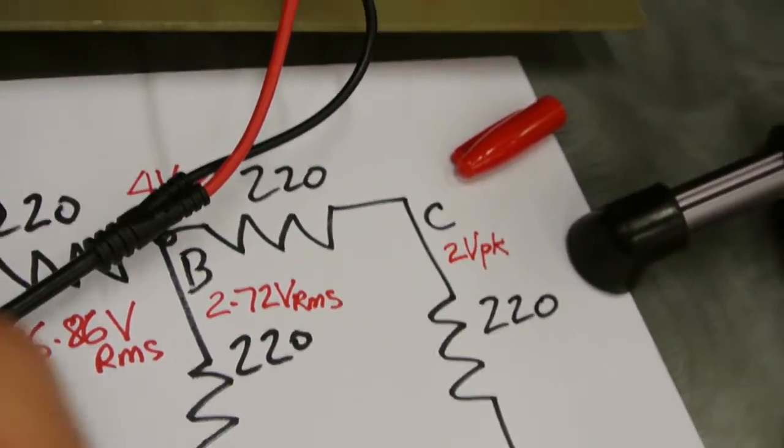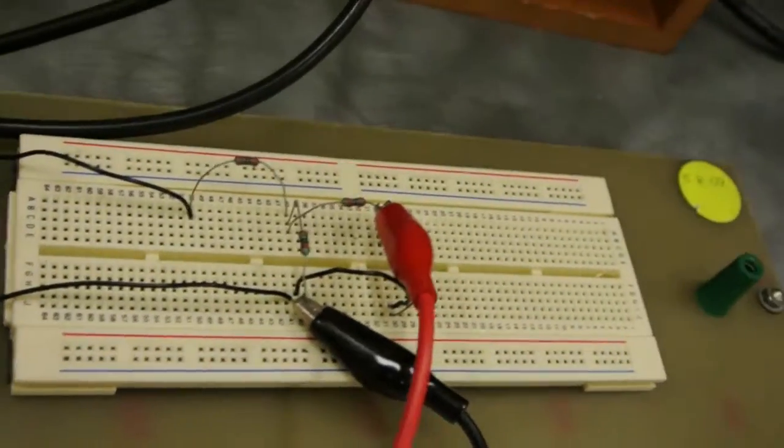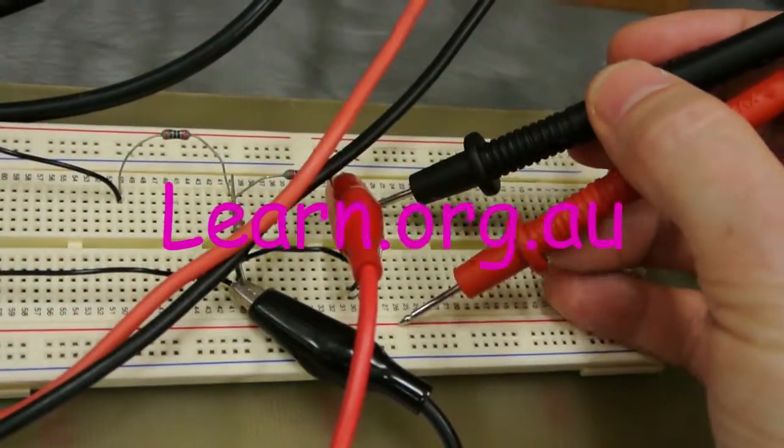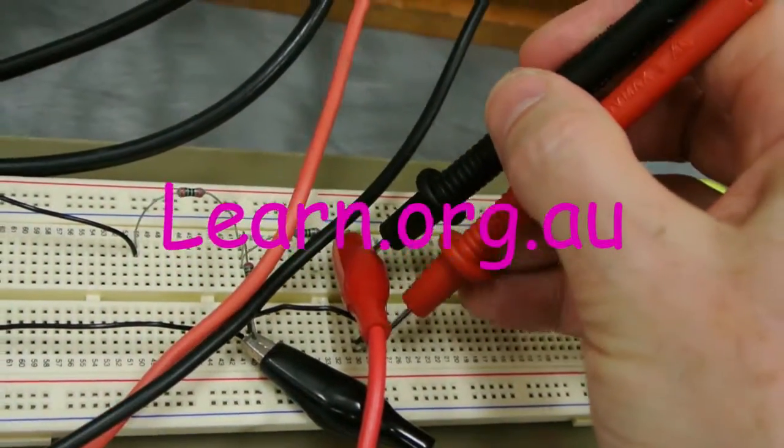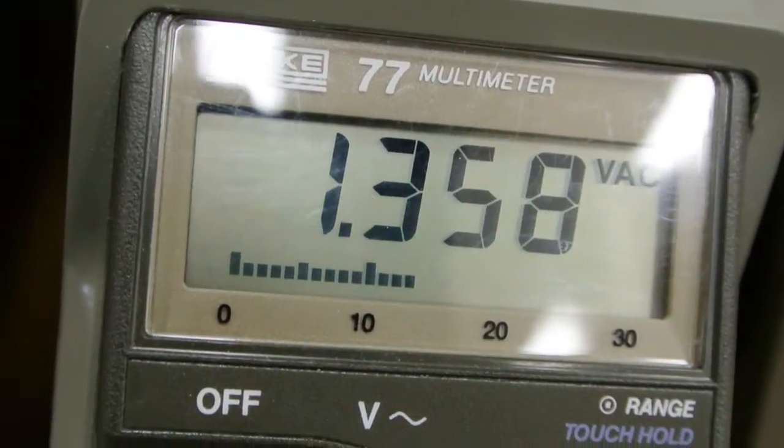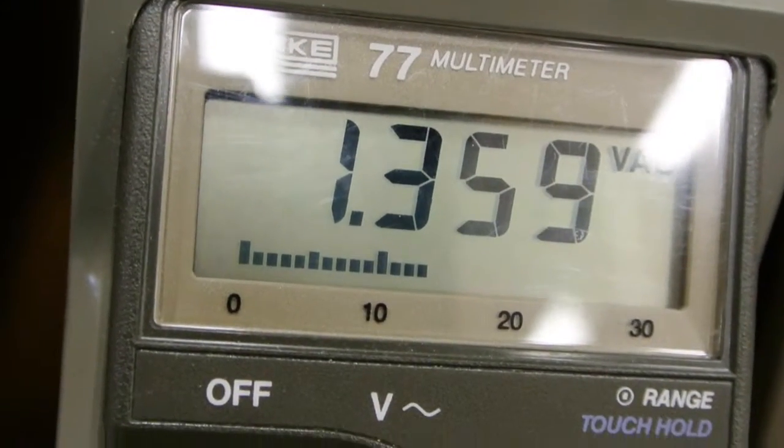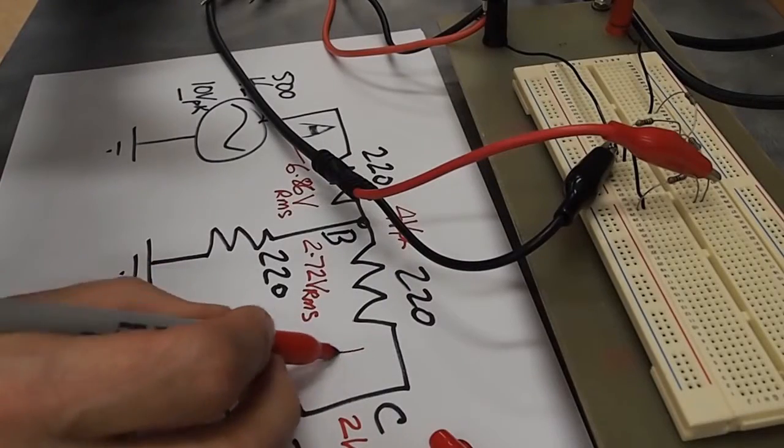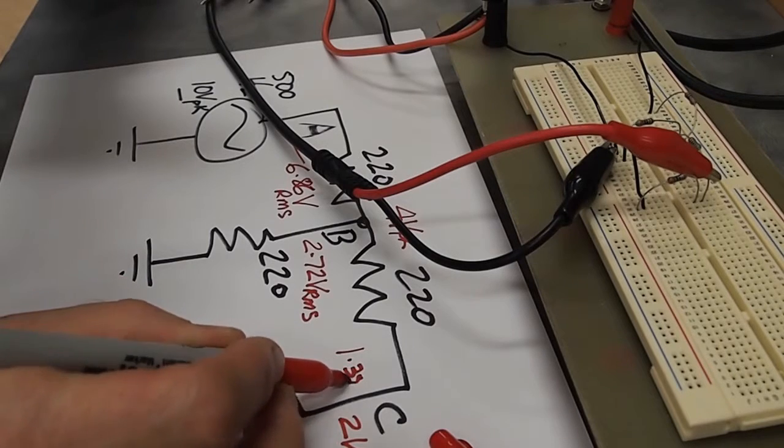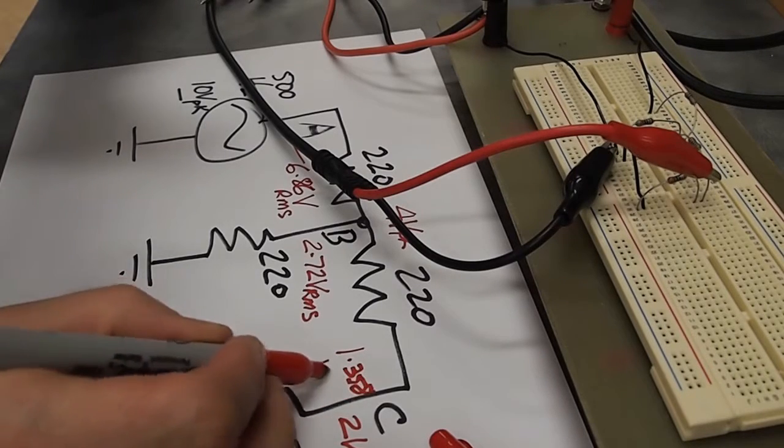And then, like I said, we'll get the multimeter, which is reading RMS, and we'll put that across the resistor. We've got 1.358. Let's record that. 1.358 volts.